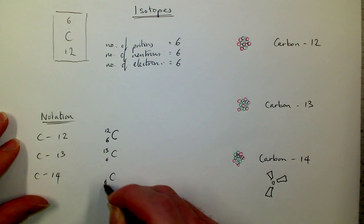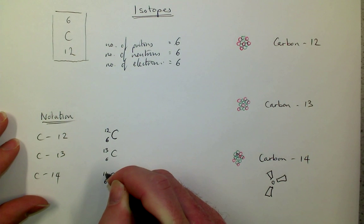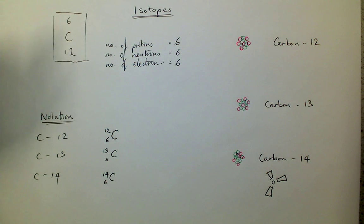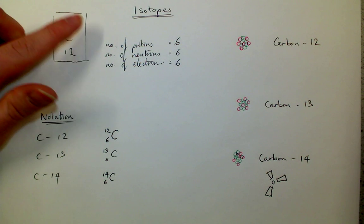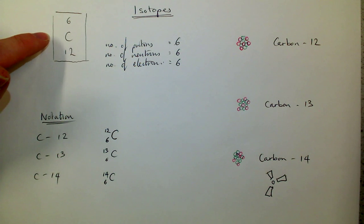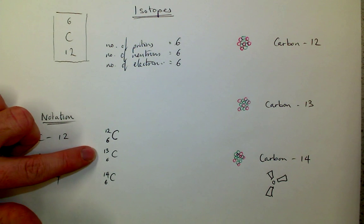Similarly with carbon-14, 6 at the bottom, 14 at the top. So you don't need to use a periodic table in physics in general, but you do need to be able to interpret the numbers if they're given to you like this, or like this, or like this.